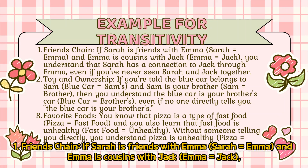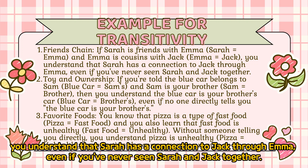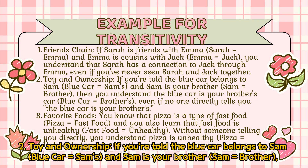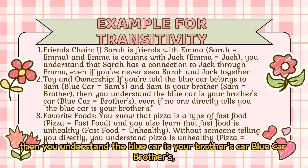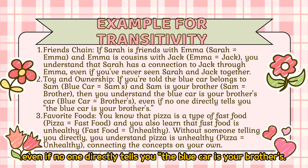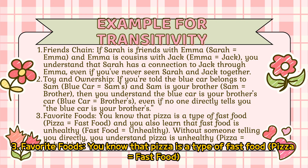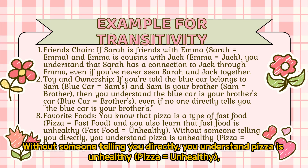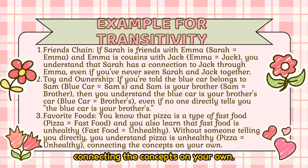Examples of transitivity: 1. Friends chain — if Sarah is friends with Emma, and Emma is cousins with Jack, you understand that Sarah has a connection to Jack through Emma, even if you've never seen Sarah and Jack together. 2. Toy and ownership — if the blue car belongs to Sam, and Sam is your brother, then you understand the blue car is your brother's car, even if no one directly tells you. 3. Favorite foods — you know that pizza is a type of fast food, and that fast food is unhealthy. Without someone telling you directly, you understand pizza is unhealthy — connecting the concepts on your own.